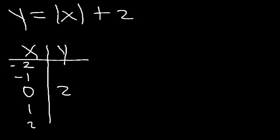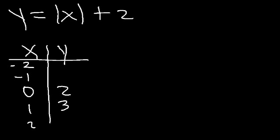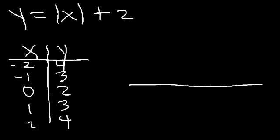If you plug in 1, 1 plus 2 is 3. Because negative 1 and 1 are equally distant from the vertex, they're going to have the same y value. The absolute value of negative 1 is positive 1, and 1 plus 2 is 3. If you plug in 2, it's 4. If you plug in negative 2, it's also 4. So now we can graph the equation.